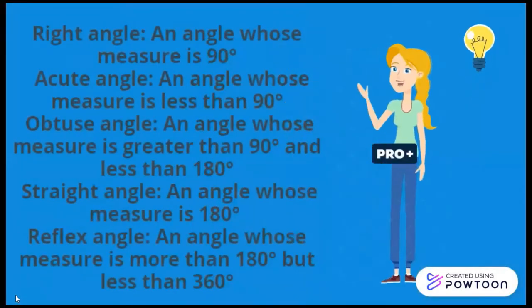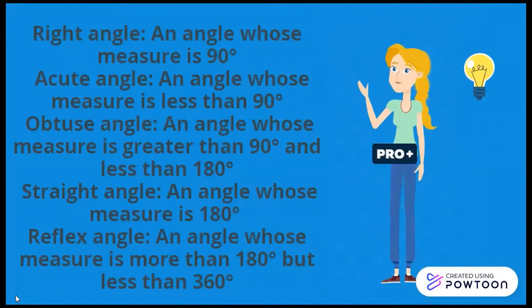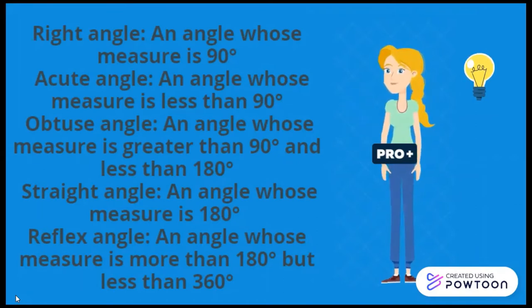Right angle: an angle whose measure is 90 degrees. Acute angle: angle measure is less than 90 degrees. Obtuse angle: greater than 90 degrees and less than 180. Straight angle: measure is 180 degrees, and reflex angle: more than 180 degrees but less than 360 degrees.